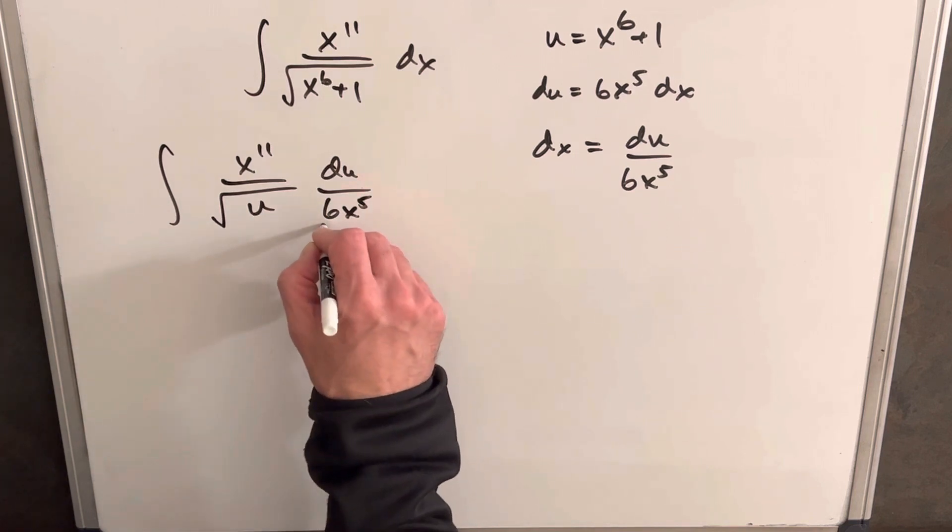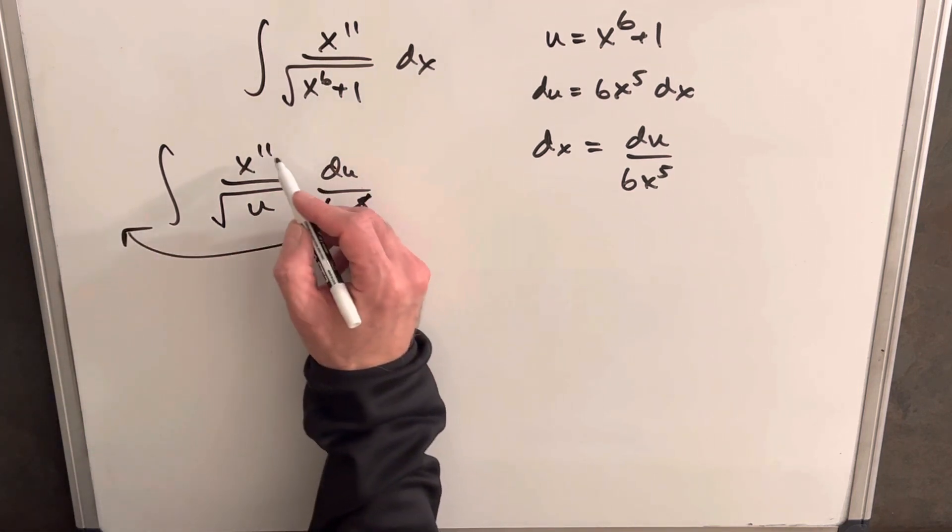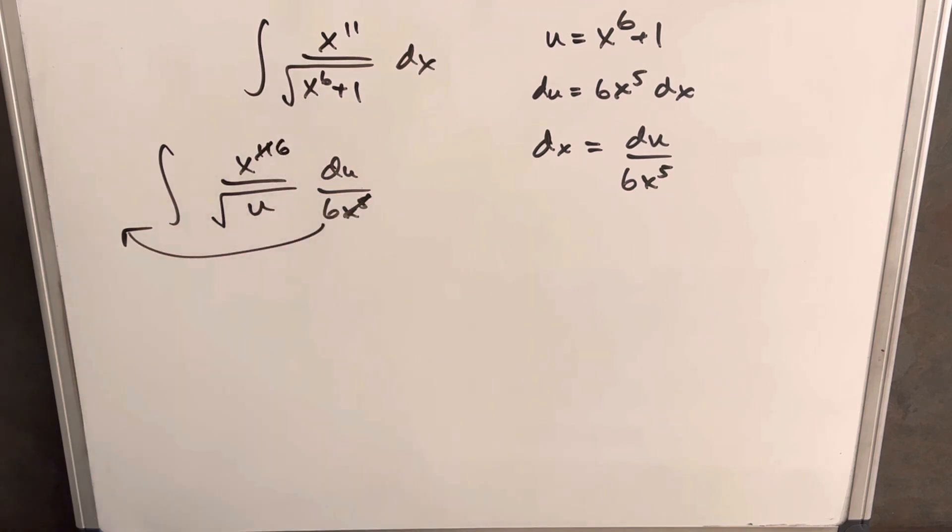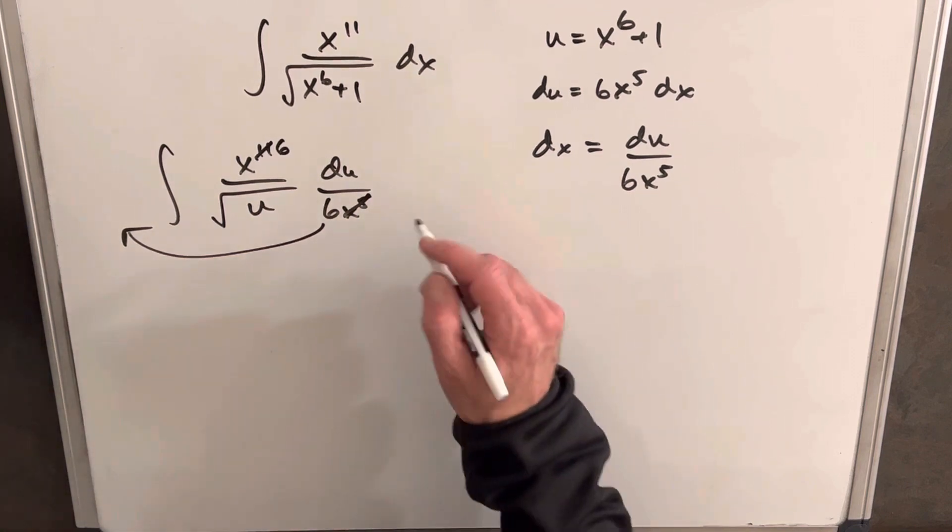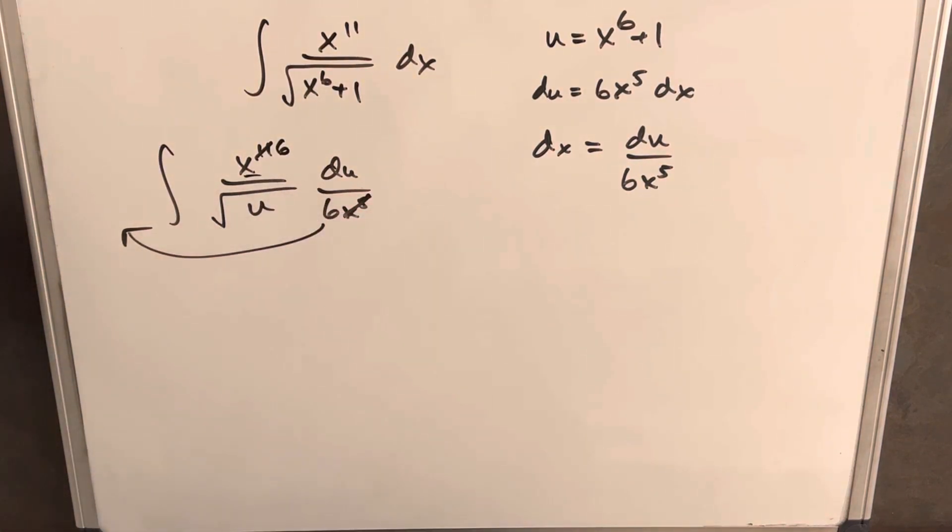Then next we're going to take the 6 out front as a 1 6th. We'll cancel five of these here, and we'll have x to the 6th in the numerator. Then before I rewrite this, let's just find a value for x to the 6th, because we need this to be in terms of u.